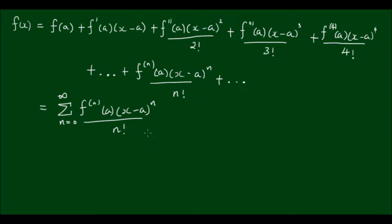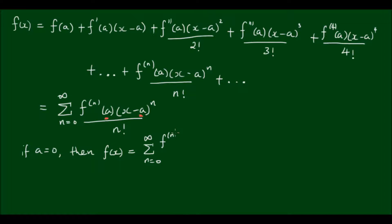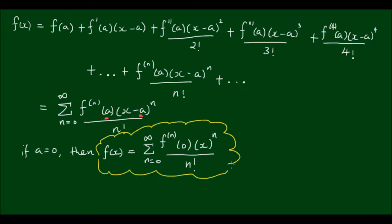The Taylor series can be used to represent any infinitely differentiable function as a sum of an infinite series centered about the point A. Now if A is equal to 0, then the series representation of f is the sum from n equals 0 to infinity of the nth derivative of f about the point 0, times x to the power of n on n factorial. This special case with x centered about 0 is called the Maclaurin series.